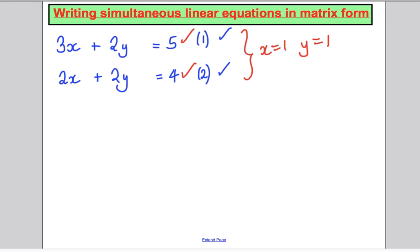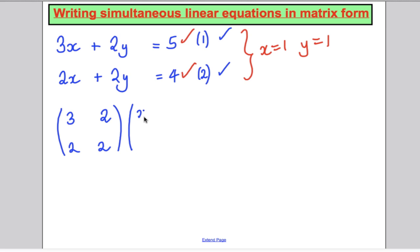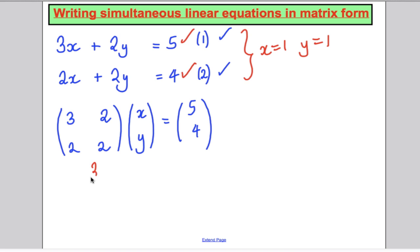We just solved them using algebra. Now I'm going to do something different. If I write them with x in a column, y in a column, and the answers in a column, I can write that as the matrix [3, 2; 2, 2] multiplied by the column vector [x; y] equals [5; 4]. That is representing those simultaneous equations, because if I multiply this matrix out, I get 3x plus 2y equals 5, and 2x plus 2y equals 4.